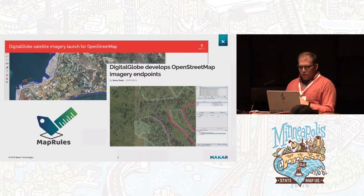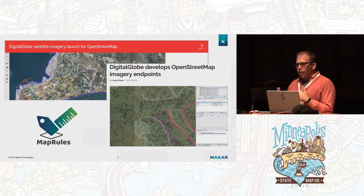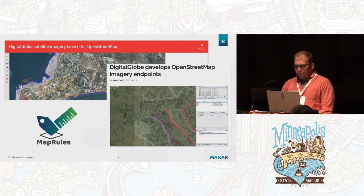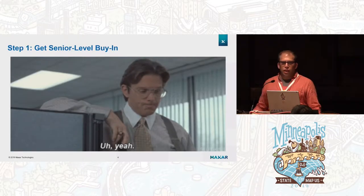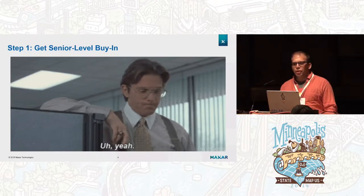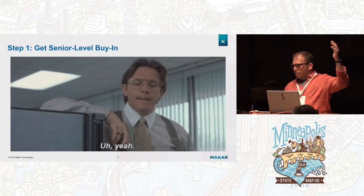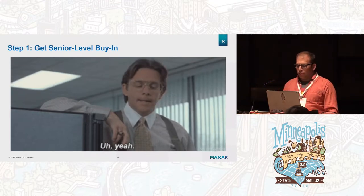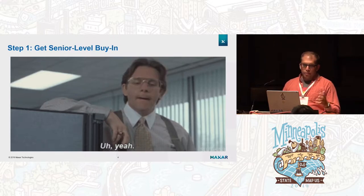The next few slides are steps on how you can run a corporate map-a-thon, knowing that we have a group interested in imagery but who know nothing about roads. First, you want to get senior-level buy-in. You want to make sure this isn't just a road group effort — you want to get upper levels of management involved. Luckily for us, we had buy-in all the way up to the CEO, who was very excited about getting everyone involved in the mapping campaign.